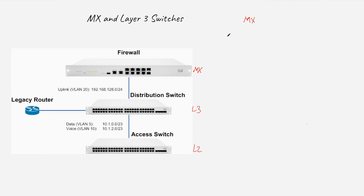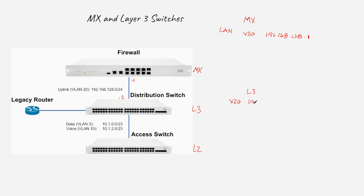On the MX, in the LAN side, we have VLAN 20. In VLAN 20, the MX gets 192.168.128.1 and the Layer 3 switch gets 192.168.128.2. The Layer 3 switch has an interface VLAN 20 with IP 192.168.128.2. This is sometimes called the transport VLAN, transit VLAN, or transient VLAN — let's call it the transit VLAN.